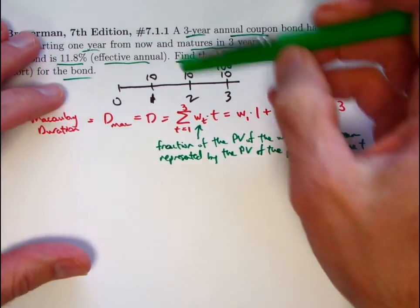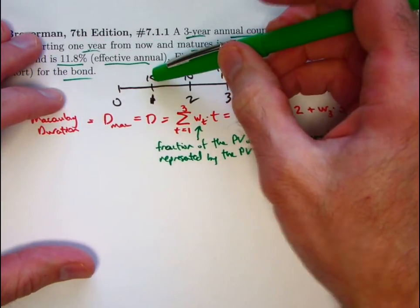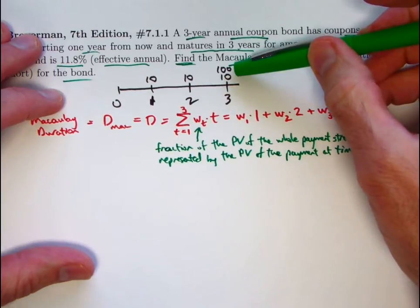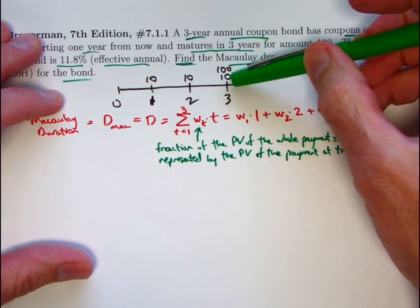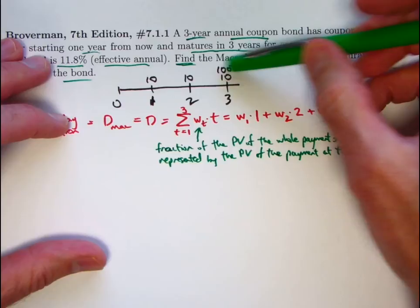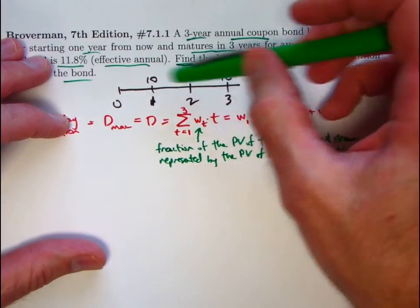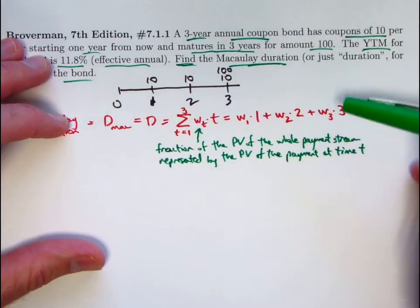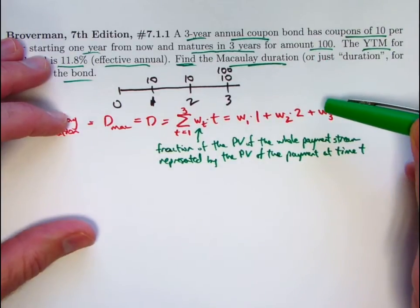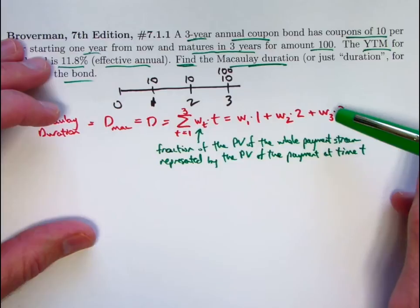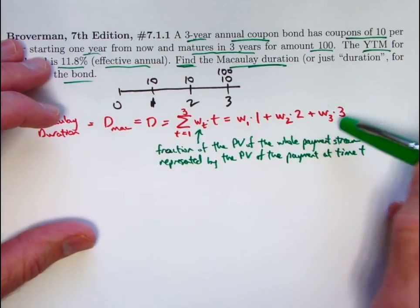The payment for this example, at time one, is 10. Payment at time two is 10. And the payment at time three is the total here, 100 plus 10 is 110. This 110 is certainly then the biggest payment, much larger than these two payments. And so it could conceivably contribute to the Macaulay duration with the biggest value. It gets multiplied by W three, gets multiplied by three. That's going to be the biggest contribution.